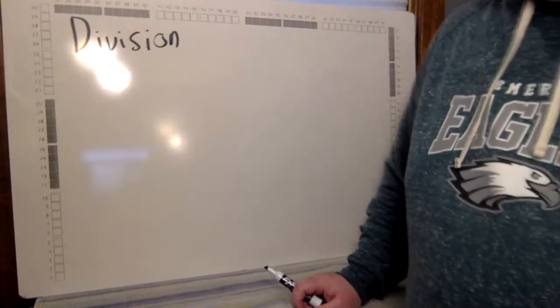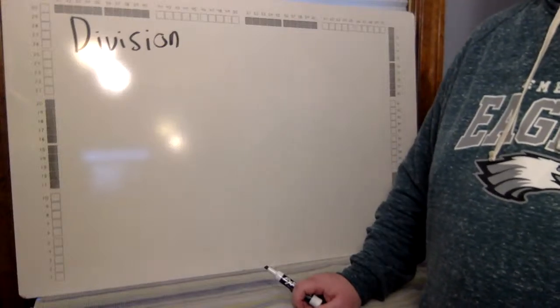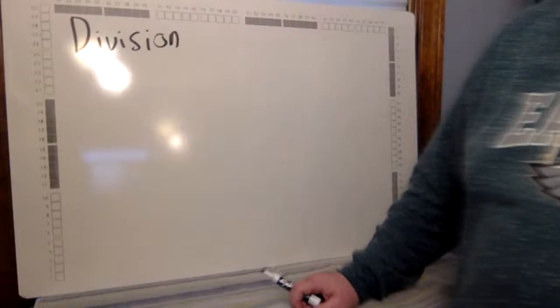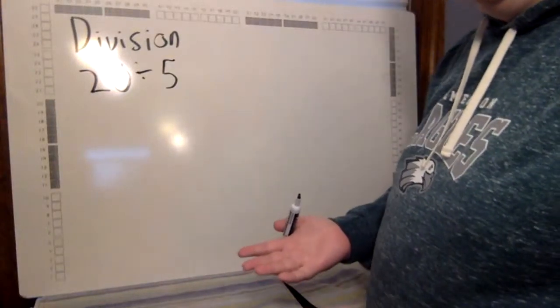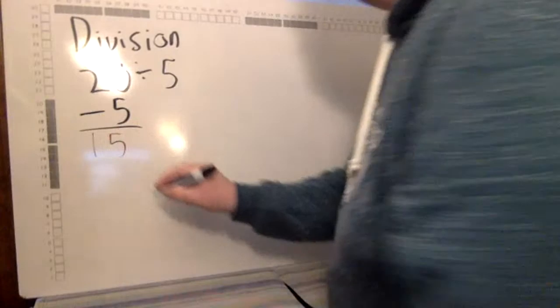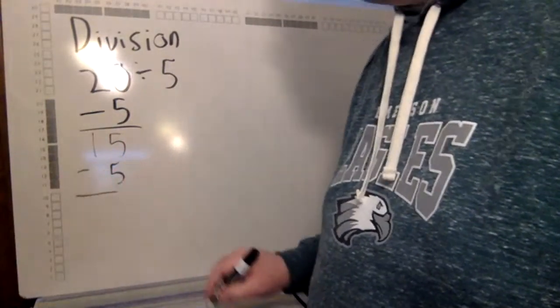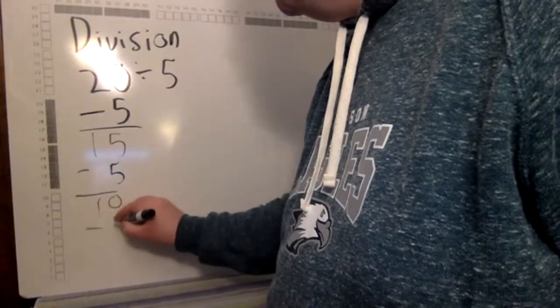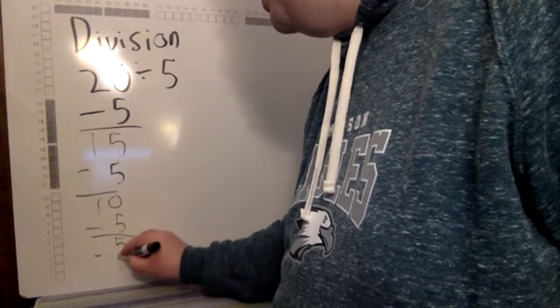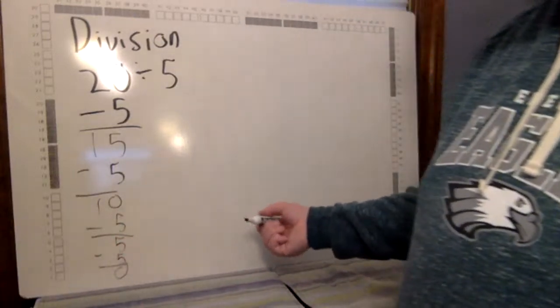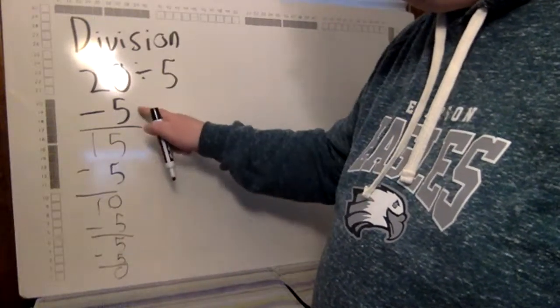So let's say I had 20 divided by 5. I could solve it a number of different ways, but one way is by doing repeated subtraction. So: 20 minus 5 equals 15, minus 5 equals 10, minus 5 equals 5, minus 5 equals 0.